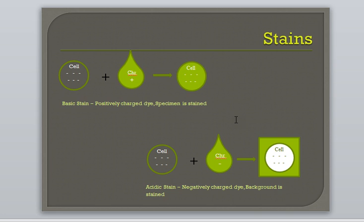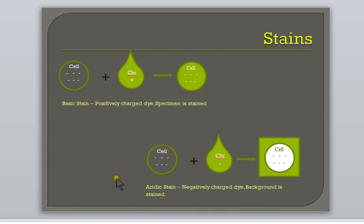In a basic stain, the chromophore is a positively charged ion. The positive charge of the dye will be attracted by the negative charge of the cell, and the chromophore will pass through the cell's membrane, staining the specimen. On the other hand, in an acidic stain, the chromophore is negatively charged. The negative charge of the cell will prevent the dye from entering the specimen; thus the chromophore remains outside of the specimen and stains the background.